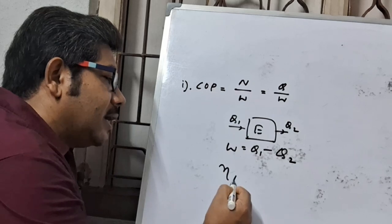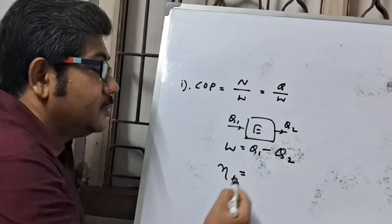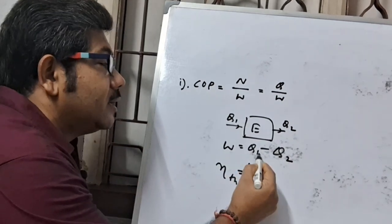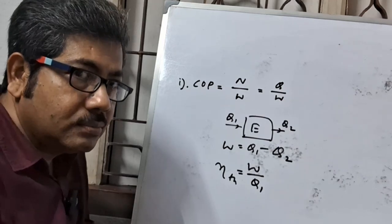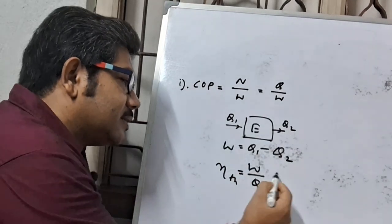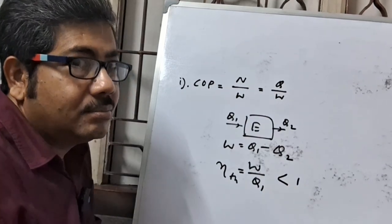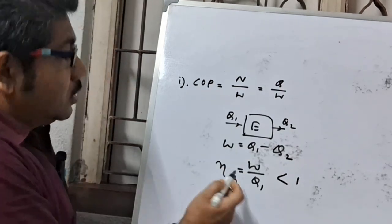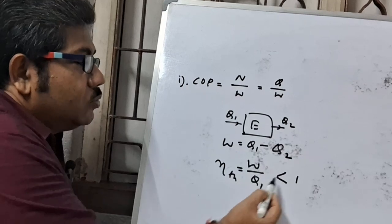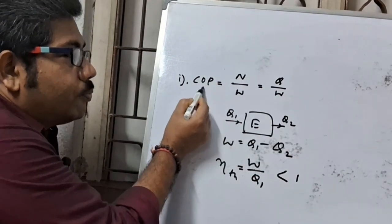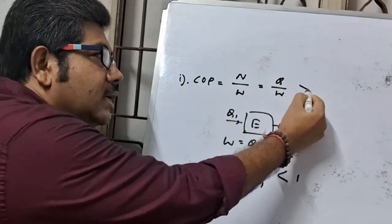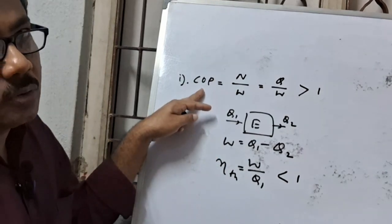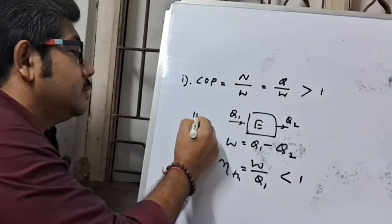We know that thermal efficiency is the ratio of output by input. Here, output is work done and input is Q1. This is always less than 100 percent, meaning less than 1, because some heat is lost. So efficiency, that is W by Q, is less than 1. And here, COP is Q by W, so it must be greater than 1. This is the difference between efficiency and COP.